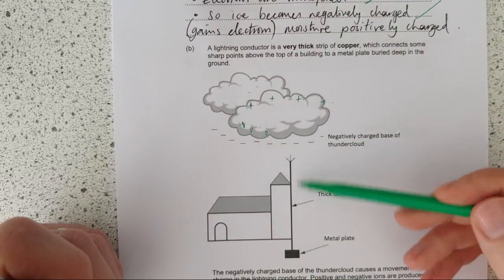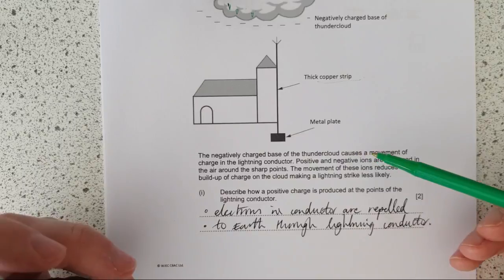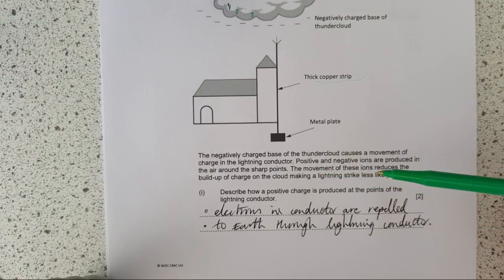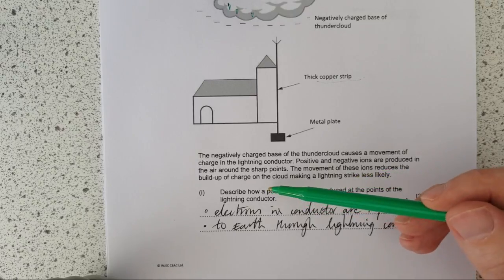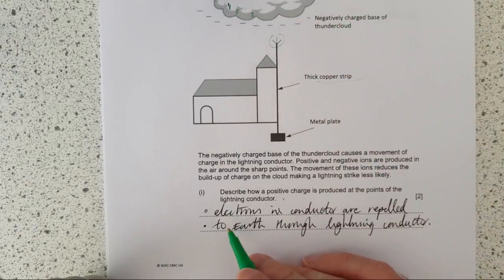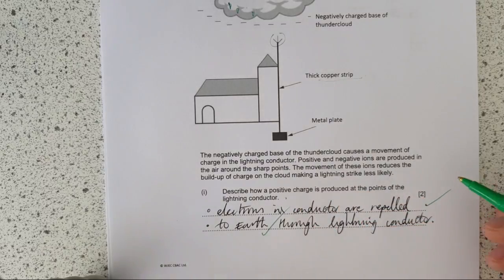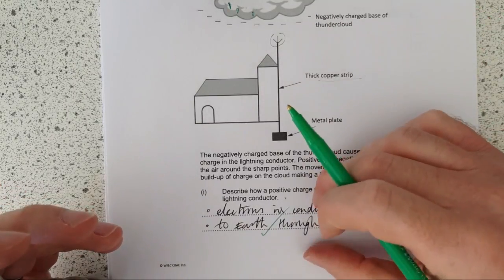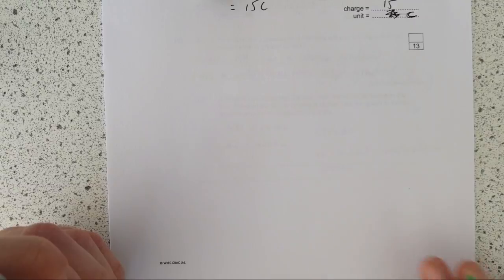So it's as it falls down the base of the thunder clouds become negatively charged and top becomes positive so you have to actually say the ice becomes negative because it gains electrons and the moisture becomes positive. So the top of the clouds become positive and the bottom becomes negative so we're used to this kind of explanation of lightning storms but then they're asking us to talk about how this lightning conductor here thing works. Describe how a positive charge is produced at the points of the lightning conductor.